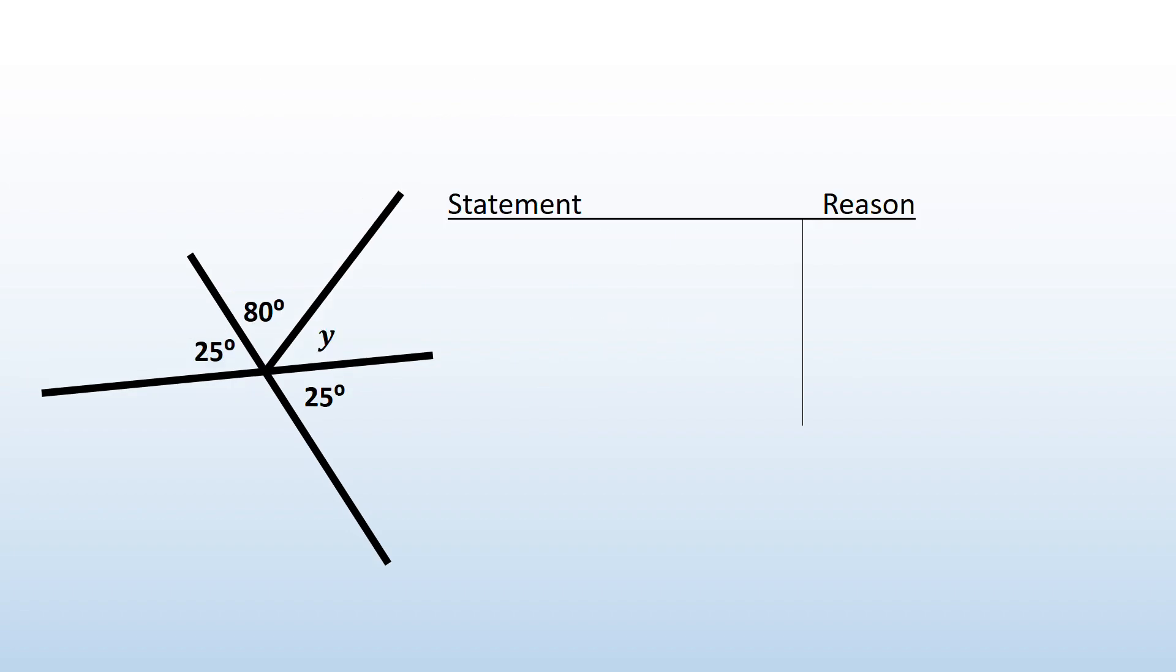Reason number two is similar to angles around a point, but sometimes they don't give you all the information you need for angles around a point. So then you use angles on a straight line. I know that a straight angle, or angles on a straight line, add up to 180 degrees.